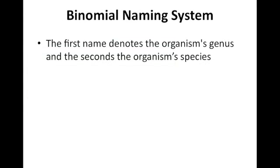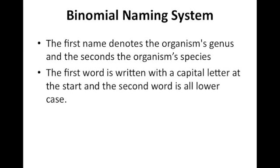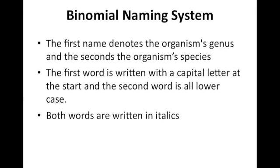The binomial naming system is the name given to every type of organism, which is made up of its genus and species. The first name denotes its genus, and the second its species. The first word starts with a capital letter, the second word is all in lowercase, and it tends to be written in italics.